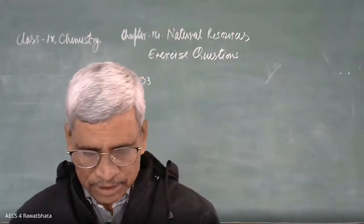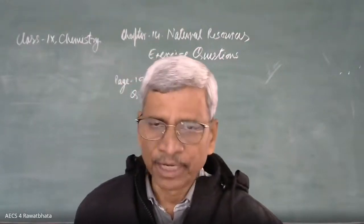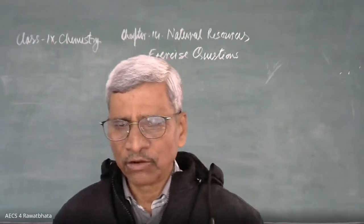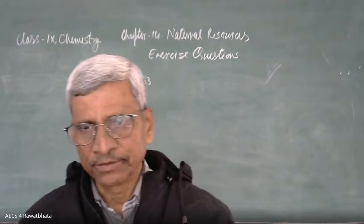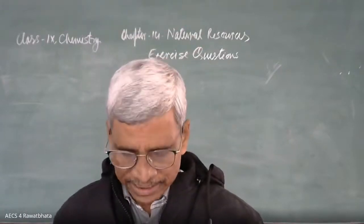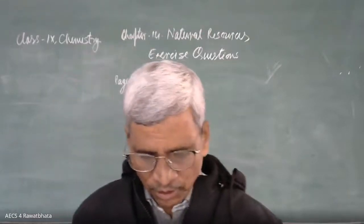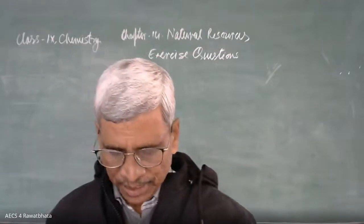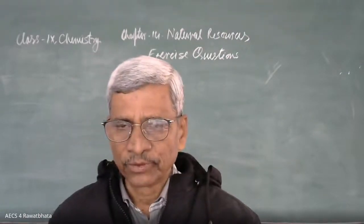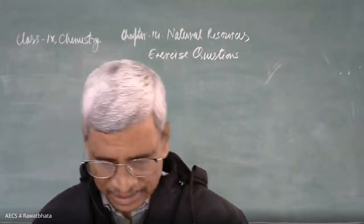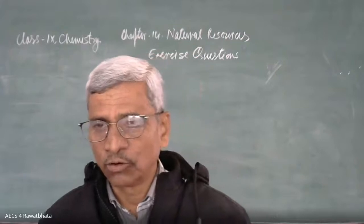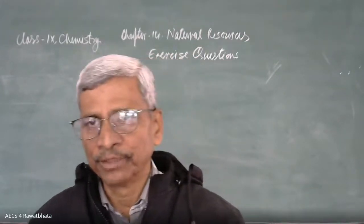Question number 1: How is our atmosphere different from the atmosphere of Venus and Mars? Our atmosphere is full of varieties — so many gases are there. Almost everything required for the life process is available: oxygen is there, nitrogen is also there, and so many other gases necessary for life processes. All the necessities of living organisms are available in our atmosphere, while in Venus and Mars, mainly carbon dioxide is present.